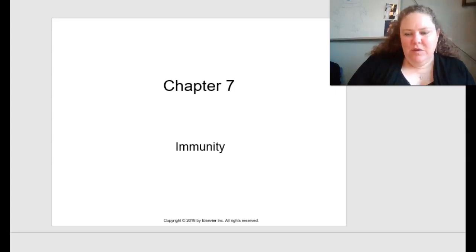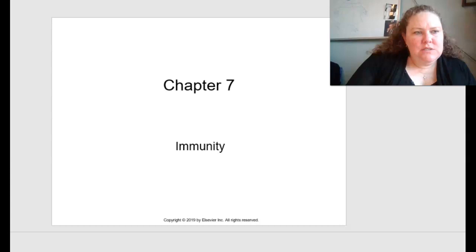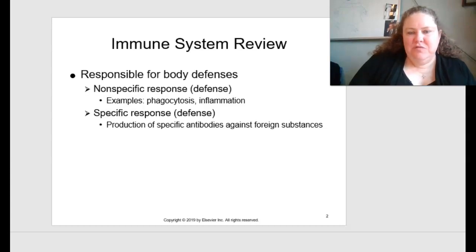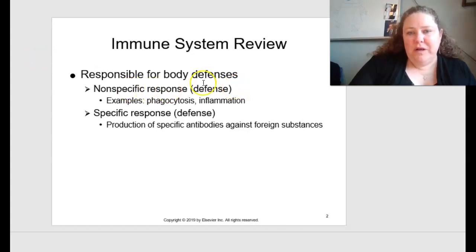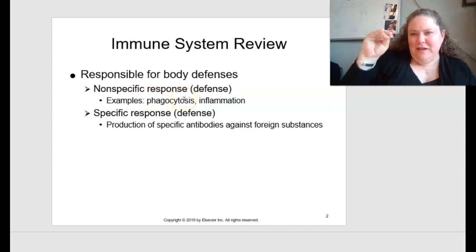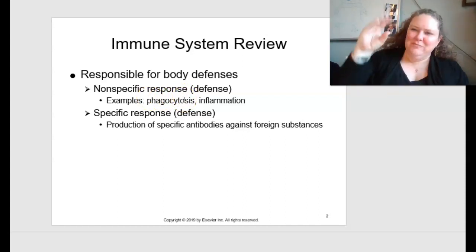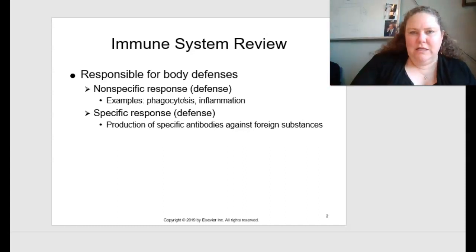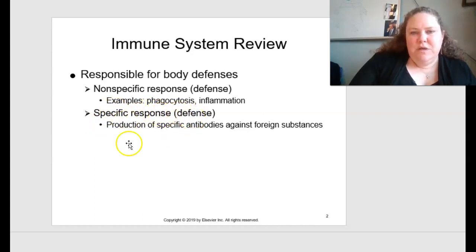Moving on to chapter seven and immunity. First, let's start off with a little bit of an immune system review. Responsible for body defenses, we have our nonspecific responses or defense mechanisms, and these include phagocytosis as well as inflammation. Phagocytosis is like little Pac-Men — they go and eat up the debris or whatever they're targeted. You also have specific responses, which is a defense mechanism — the production of specific antibodies against foreign substances.